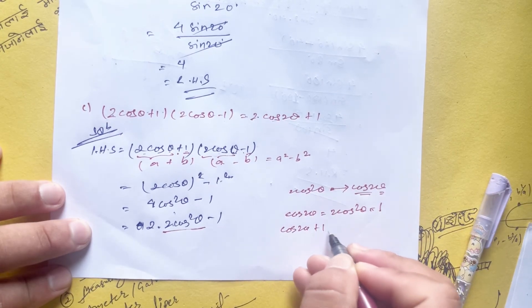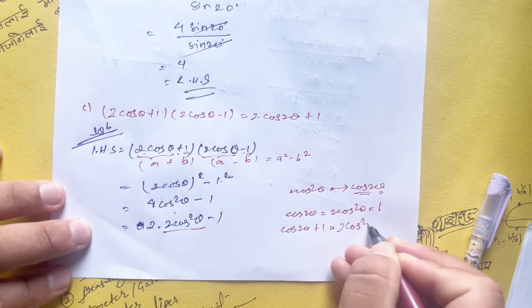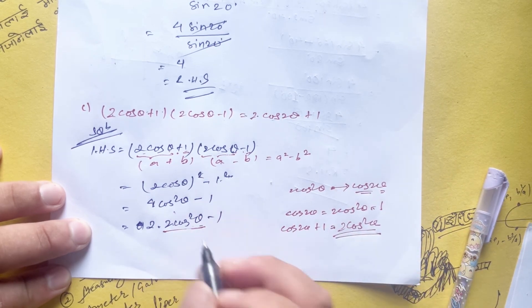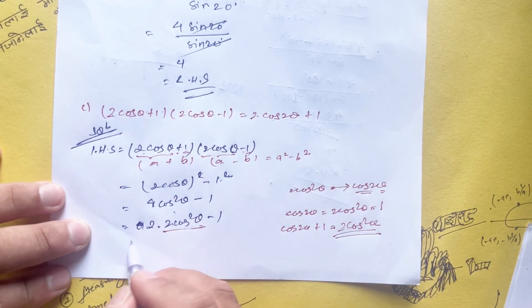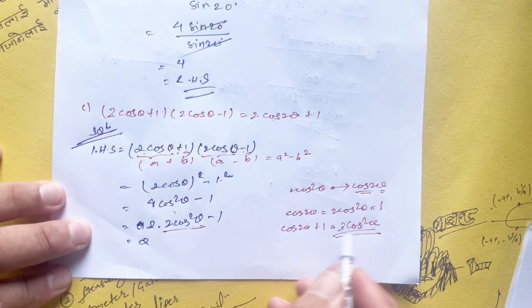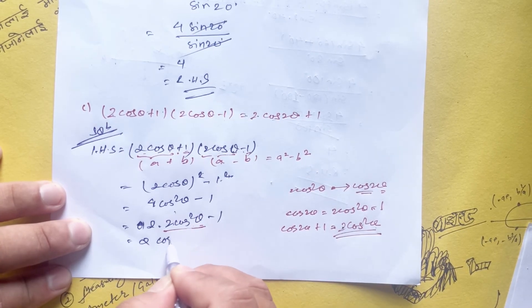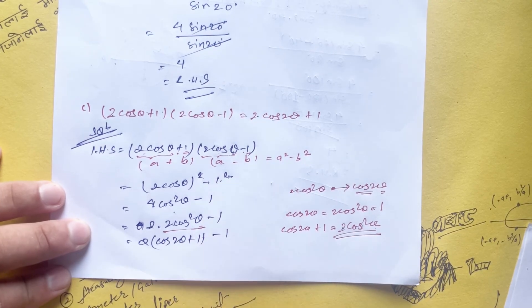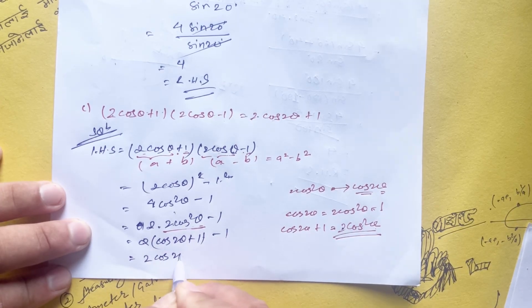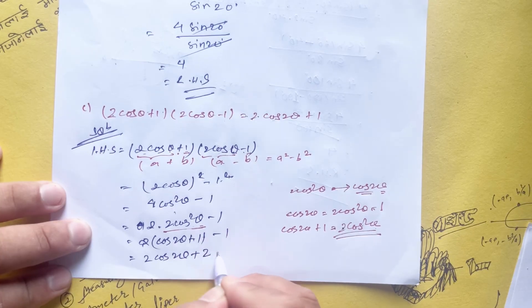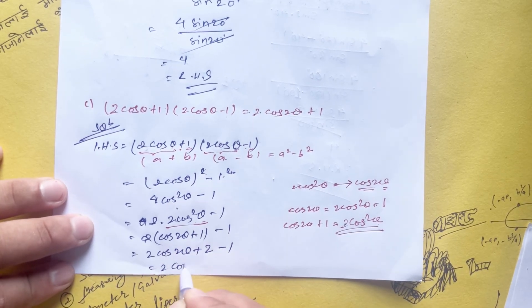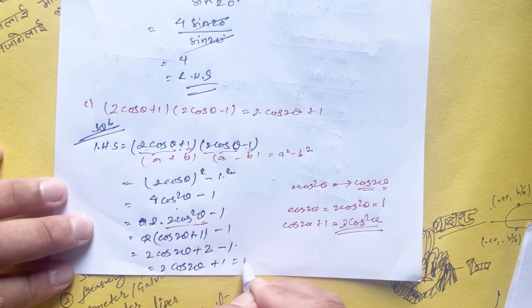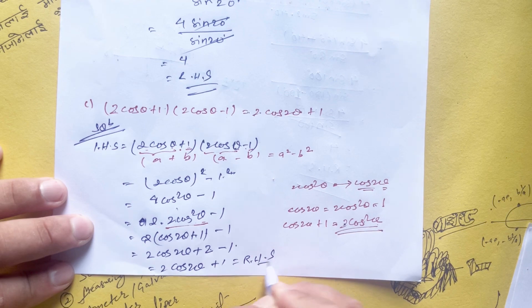Now using the identity 2 cos² theta equals cos 2 theta plus 1, we can write 4 cos² theta as 2(2 cos² theta), which equals 2(cos 2 theta + 1). Expanding gives us 2 cos 2 theta + 2 - 1, which equals 2 cos 2 theta + 1.